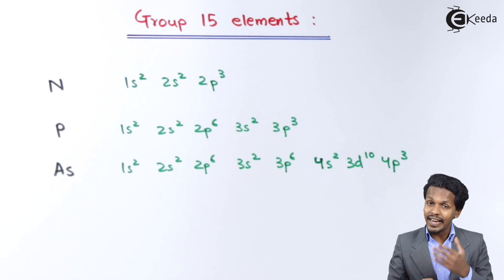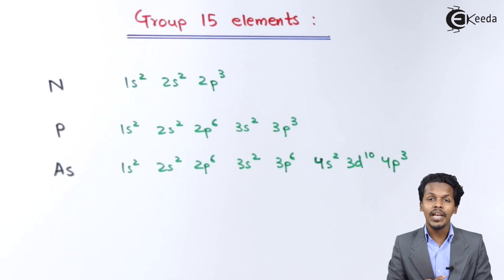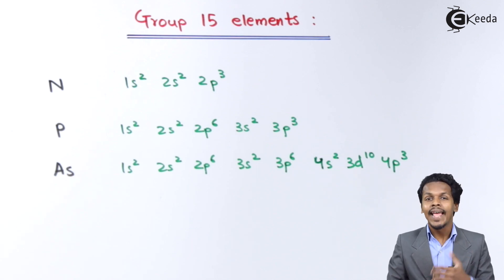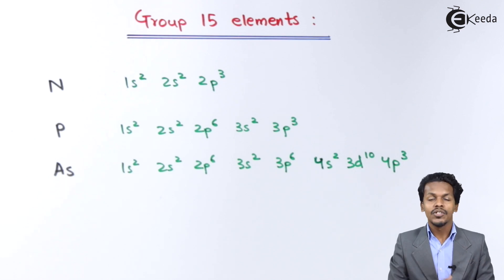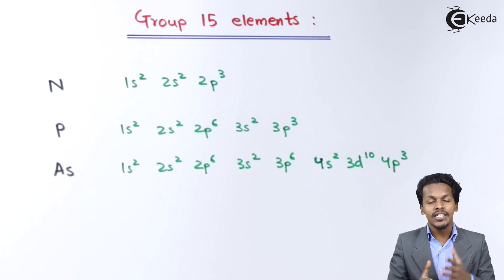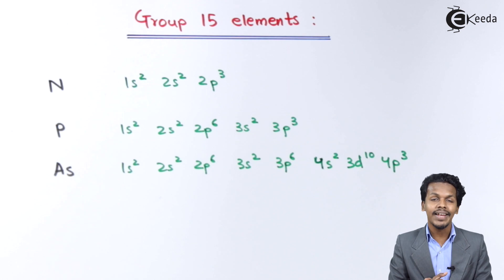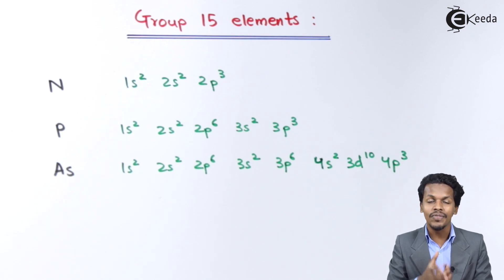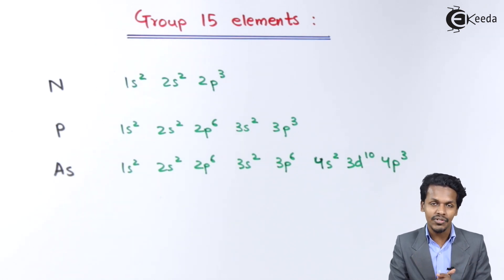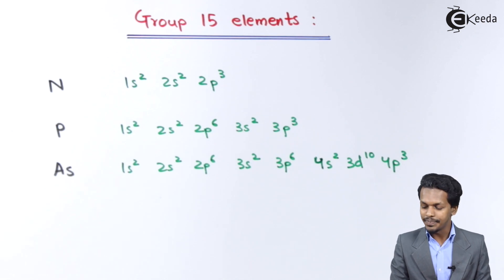Talking about the group 15 elements, it starts with the element Nitrogen, then Phosphorus, and then it comes to Arsenic, Antimony, and Bismuth. Based on that, let me make you understand how we can write the electronic configuration and what are the different occurrences of those elements present in nature. So let me talk about the first one, that is Nitrogen.